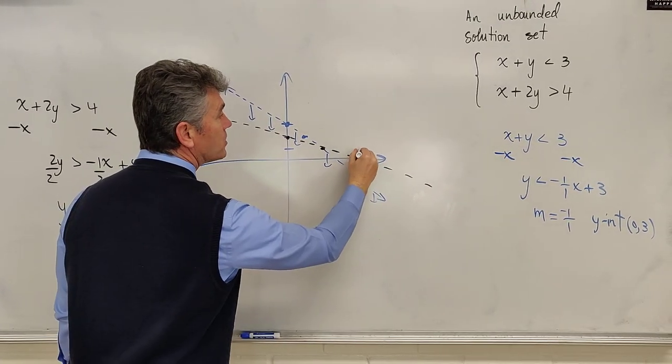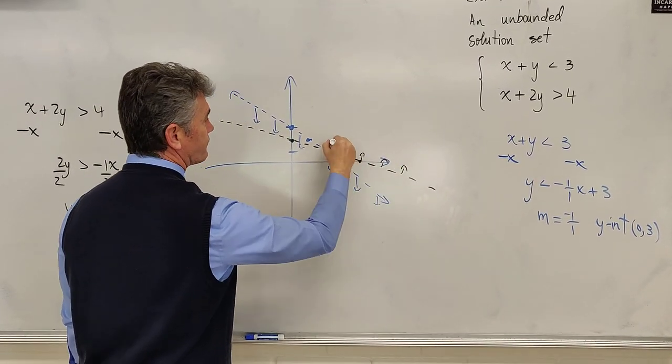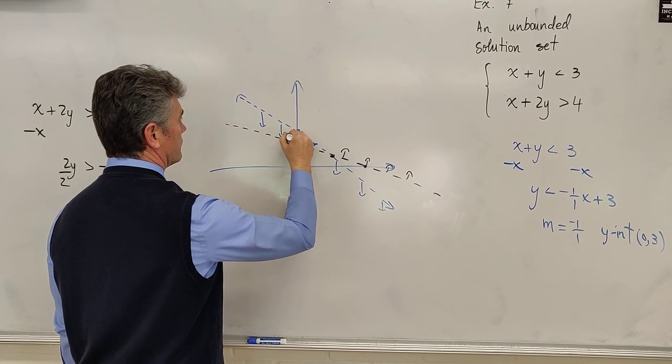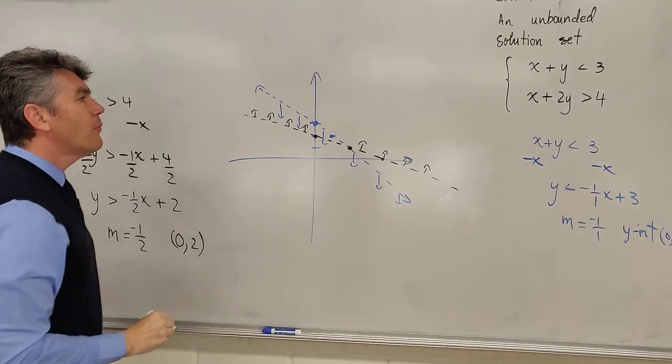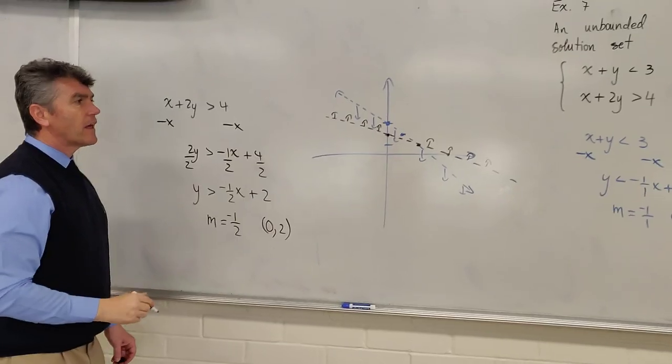For this graph, we would shade above. So greater than, so just the upper half-plane. And then, what do we notice?